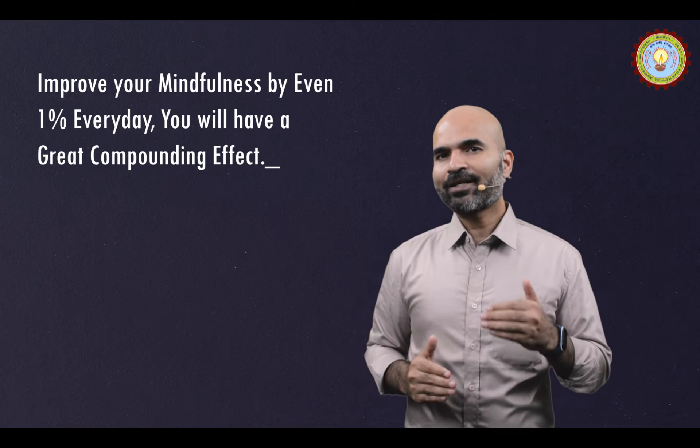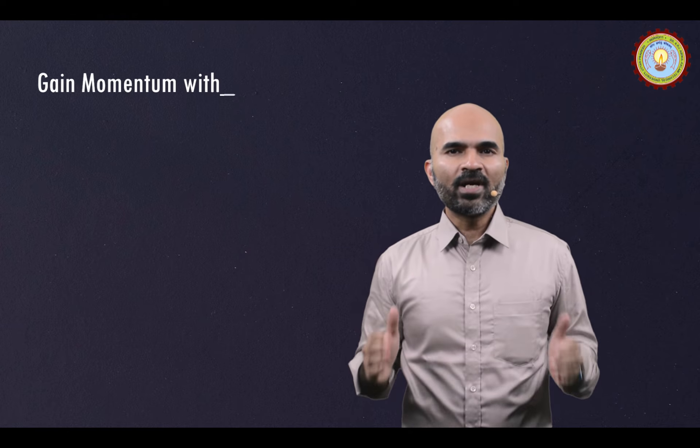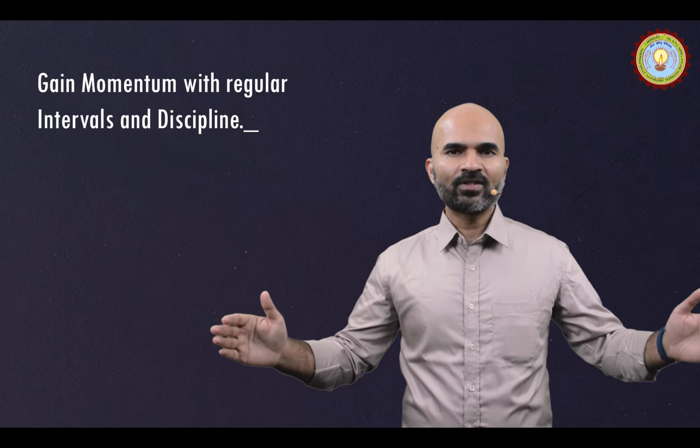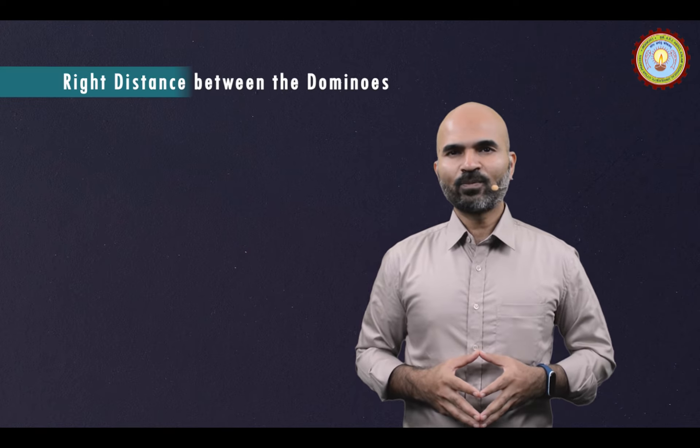The next step is to gain momentum with regular intervals and discipline. Remember, there must be the right distance between the dominoes. In real life that means the right frequency of iterations. As per the target of reducing the weight by 20 kg, the goals have to be aligned and one should follow it with discipline. And if you keep doing this on a regular basis, slowly you will find you have transformed so much. The transformation at the end is amazing and people don't realize how it happens.